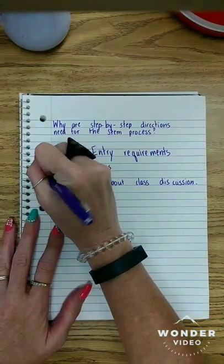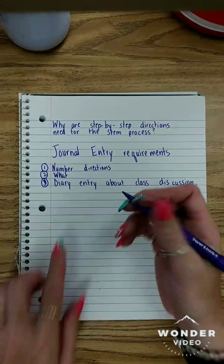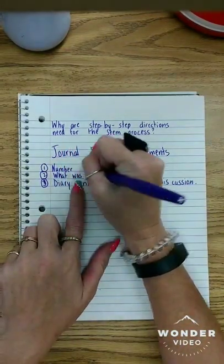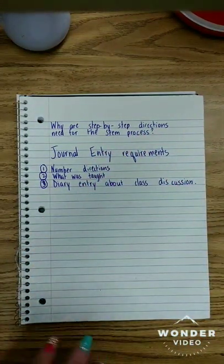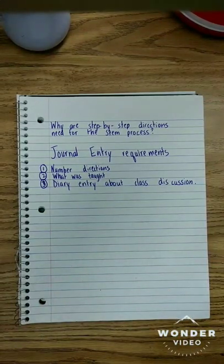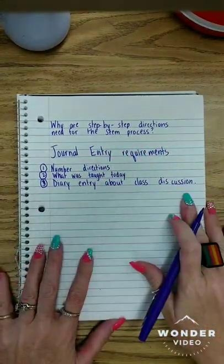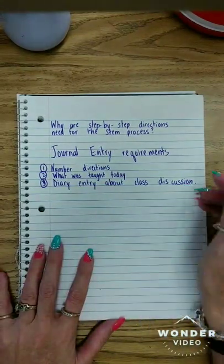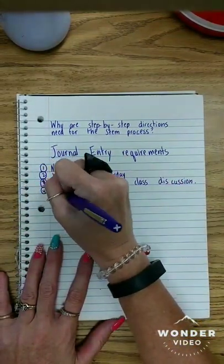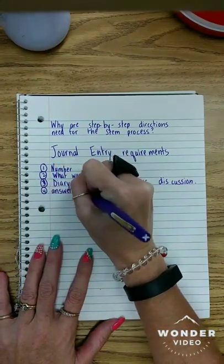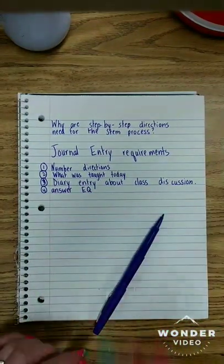The second thing we need is a diary entry about our class discussion. Number two: what did you learn from the PowerPoint, or what was something interesting to you in the PowerPoint? It could be one thing — you could talk about the notes, the video, anything taught during the lesson. The fourth requirement is to answer your essential question — answer the EQ. These are the four requirements for the journal entry.